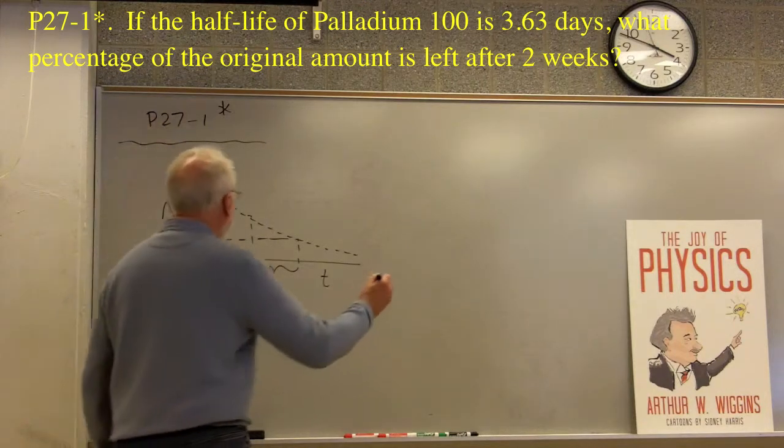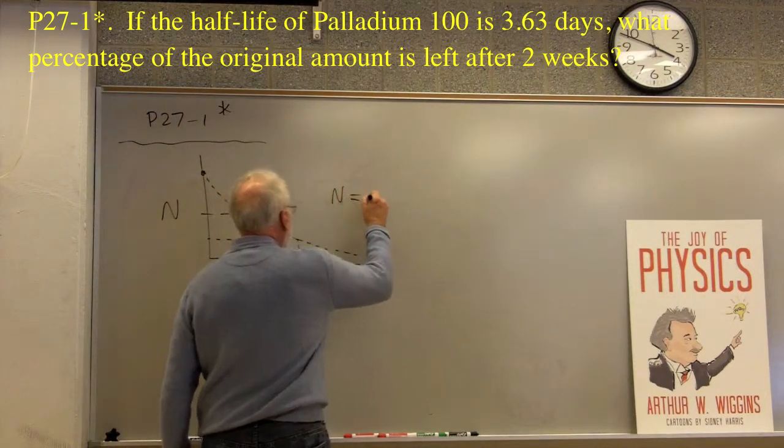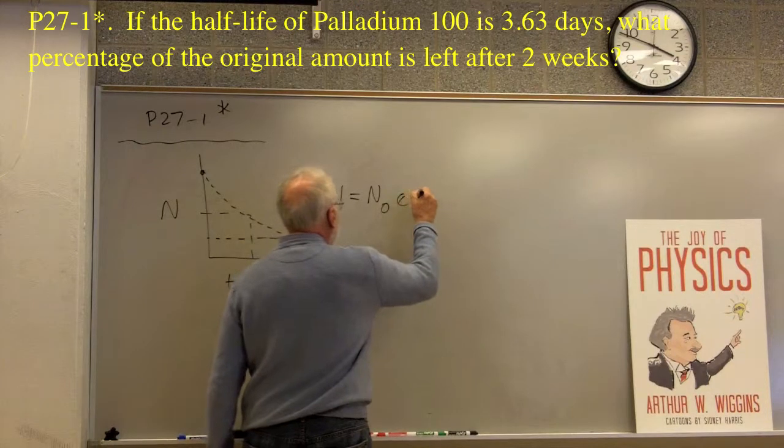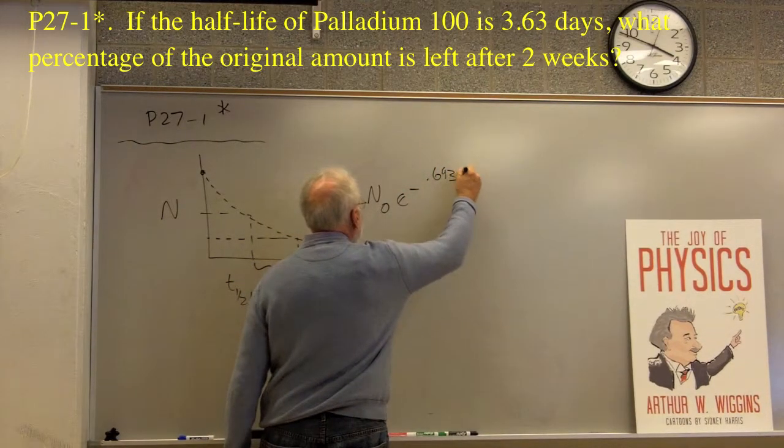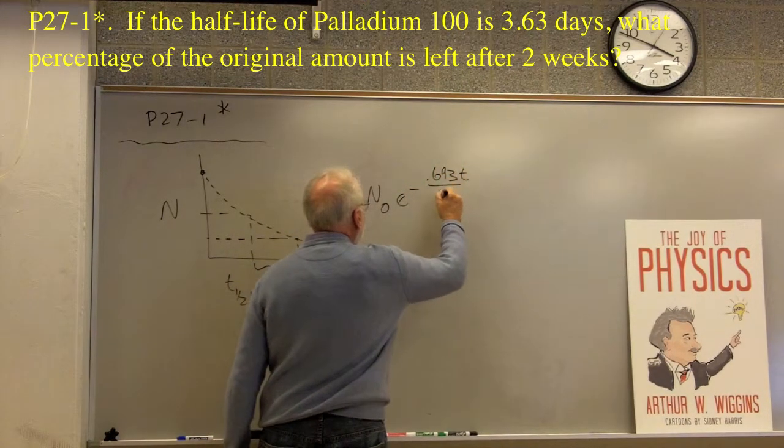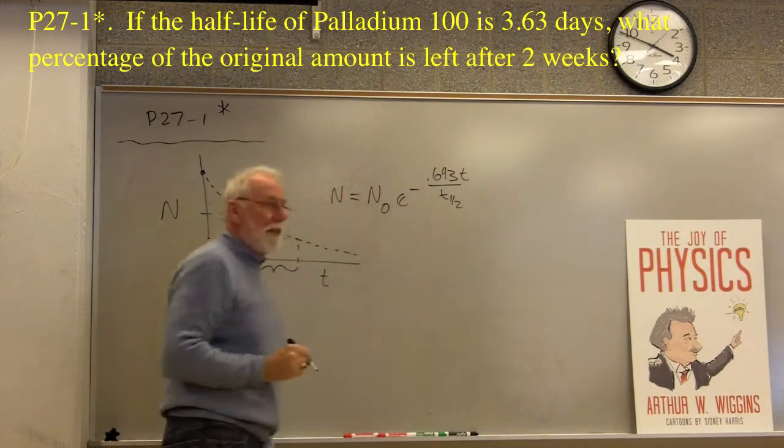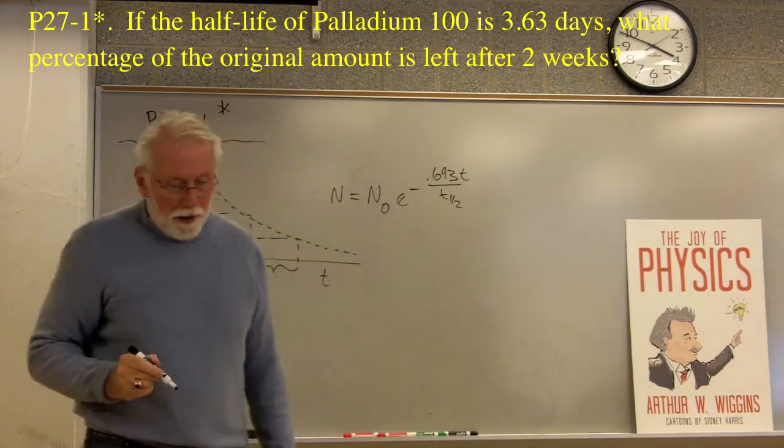So then, there's an equation that says, N equals N0 e to the minus 0.693t divided by the half-life. T1 half.